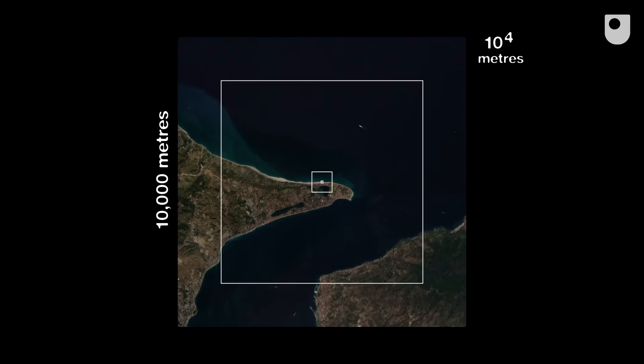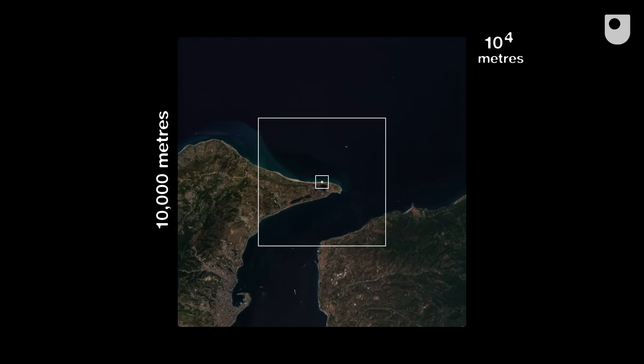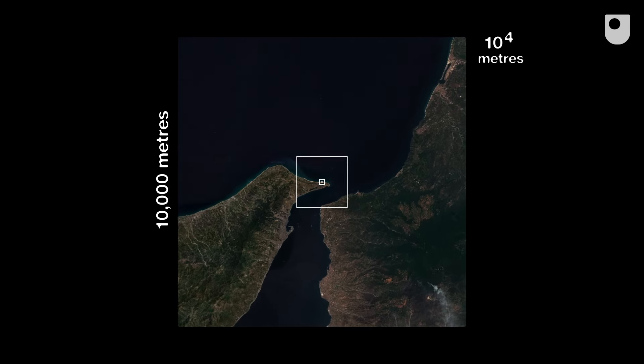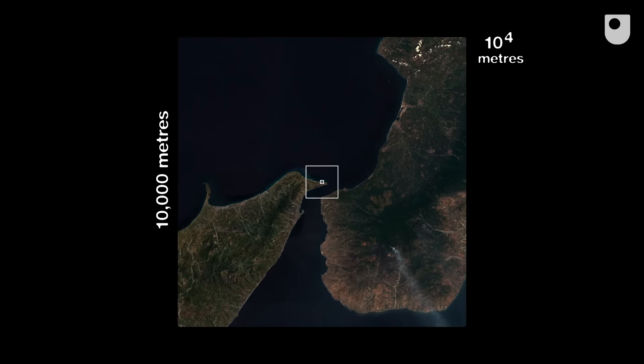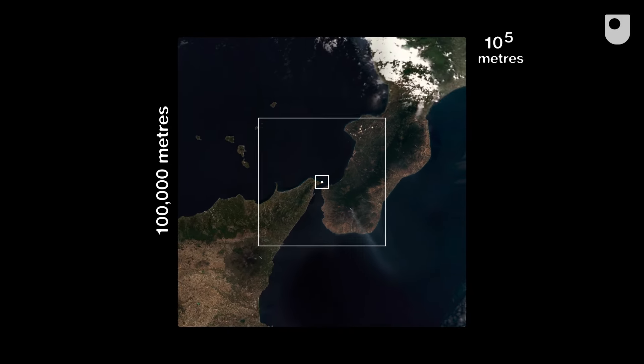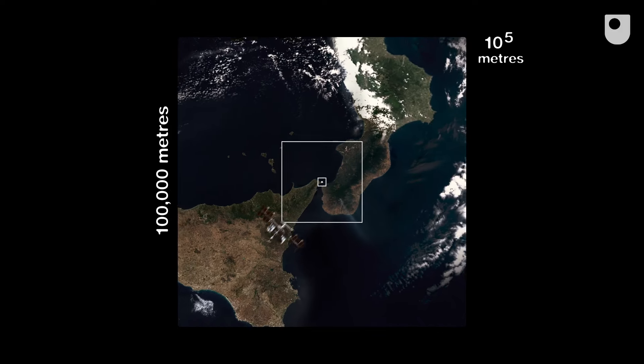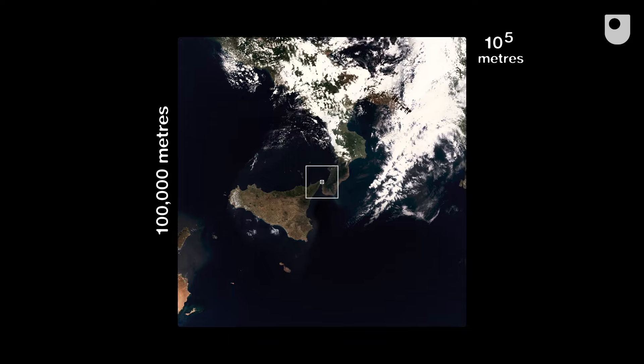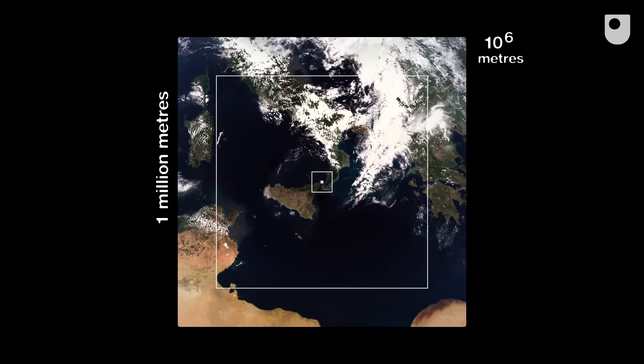Ten thousand metres, or ten to the four metres. This is the distance a supersonic plane travels in ten seconds, and we're now reaching the highest altitude flown by such a plane. Ten to the five metres. This is the distance the International Space Station travels in ten seconds. There it goes. From here on, human activity will be lost to sight.